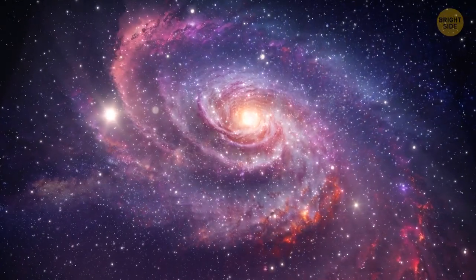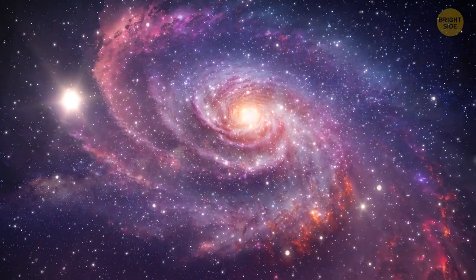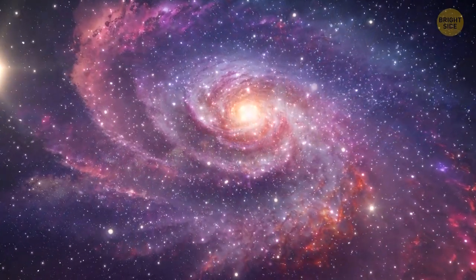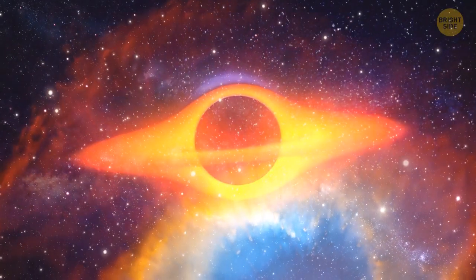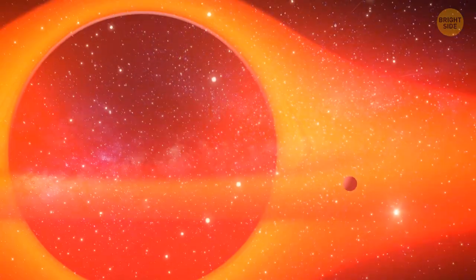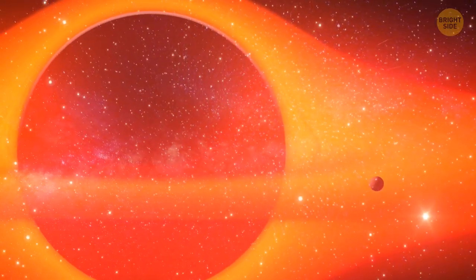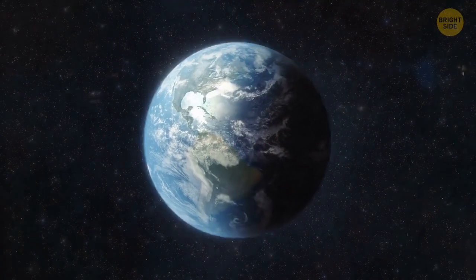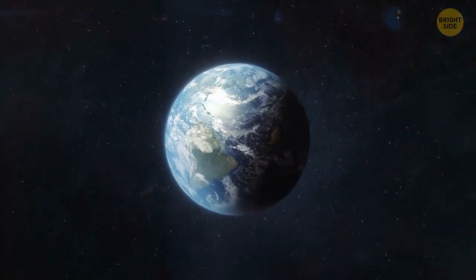There is a supermassive black hole smack dab in the middle of our galaxy, the Milky Way. Its name is Sagittarius A star. And it's 4.3 million times as heavy as the Sun. And nope, we aren't going to be pulled into this hole. It's more than 26,000 light years from Earth, too far to have any influence on our planet.